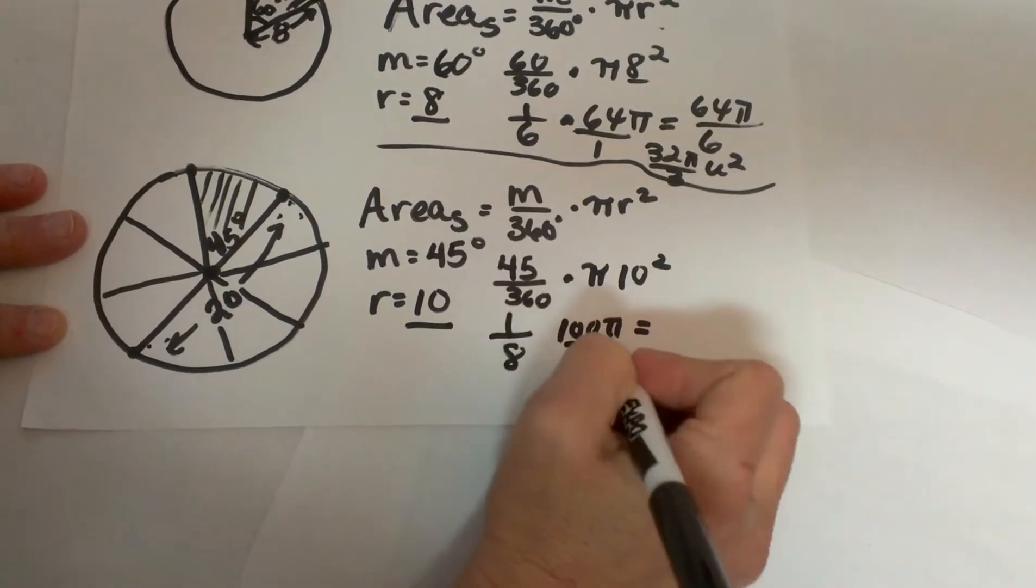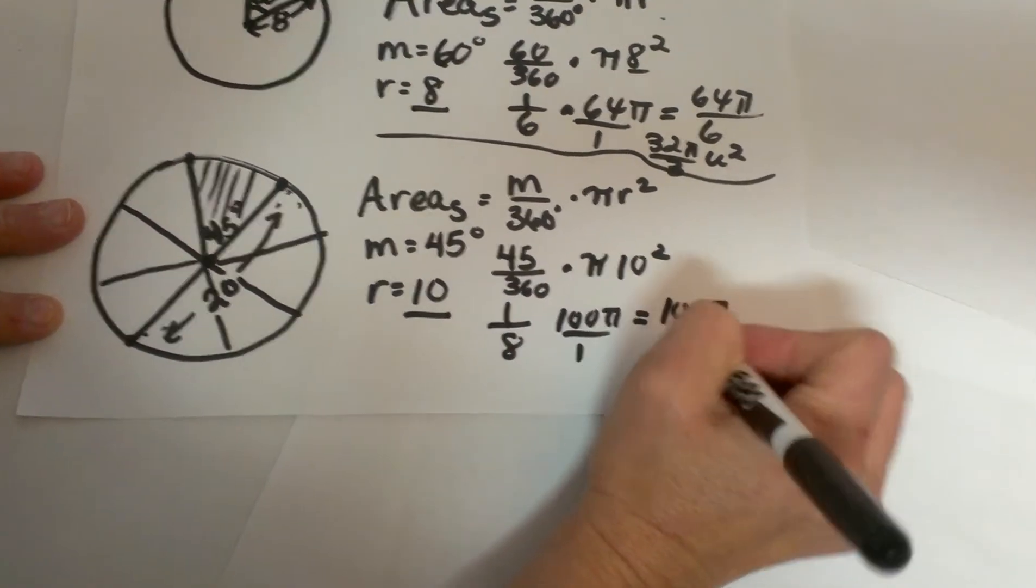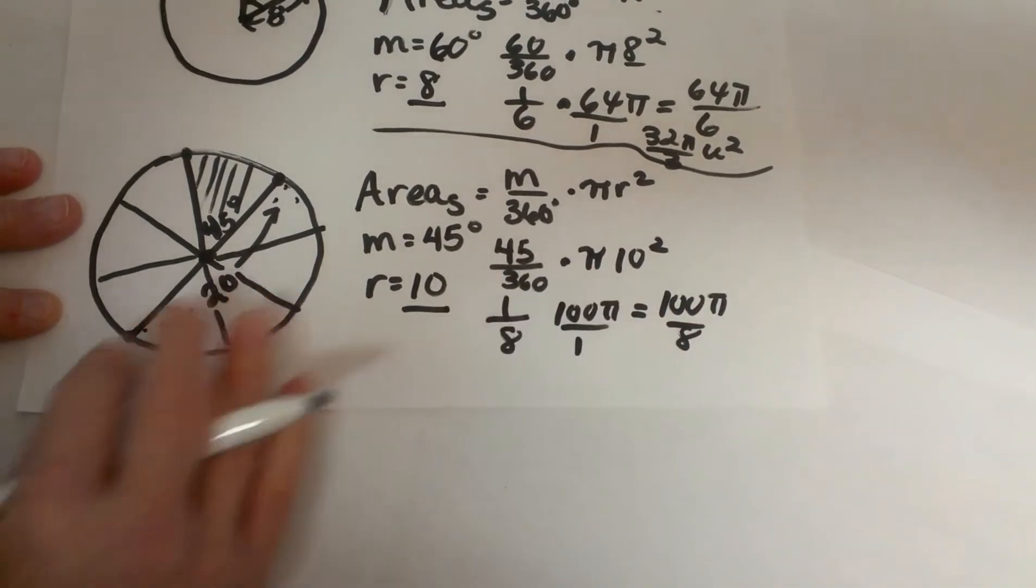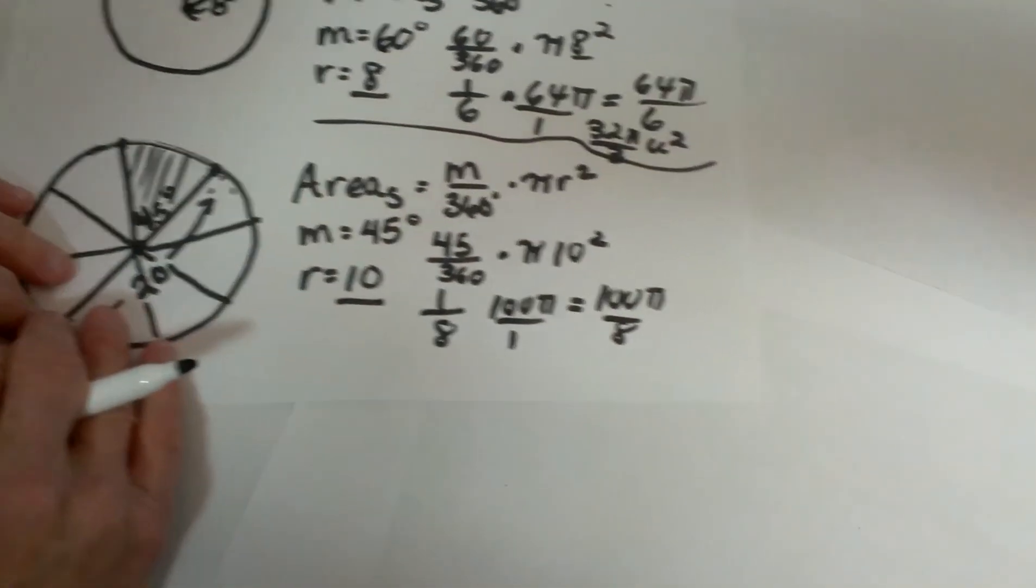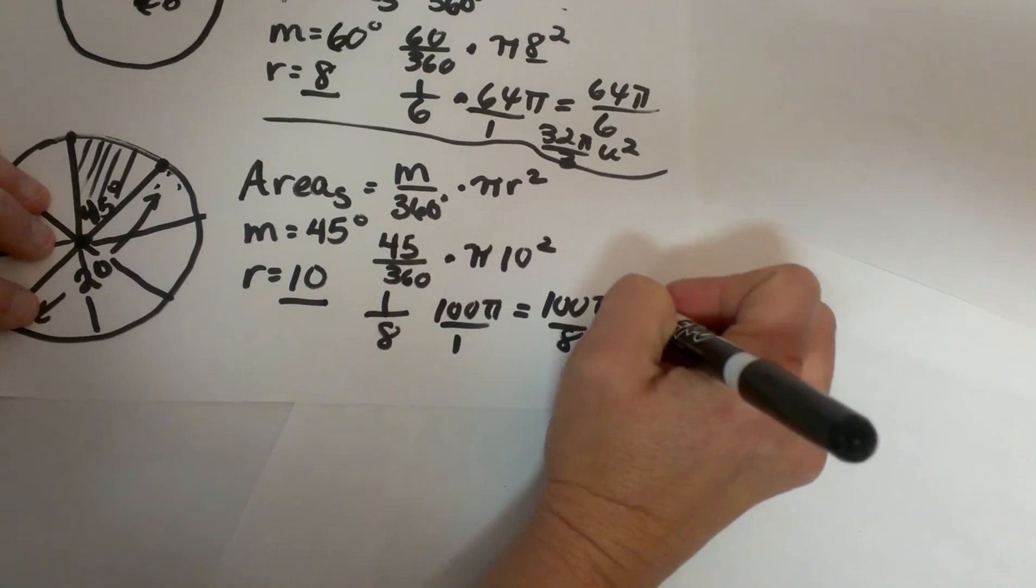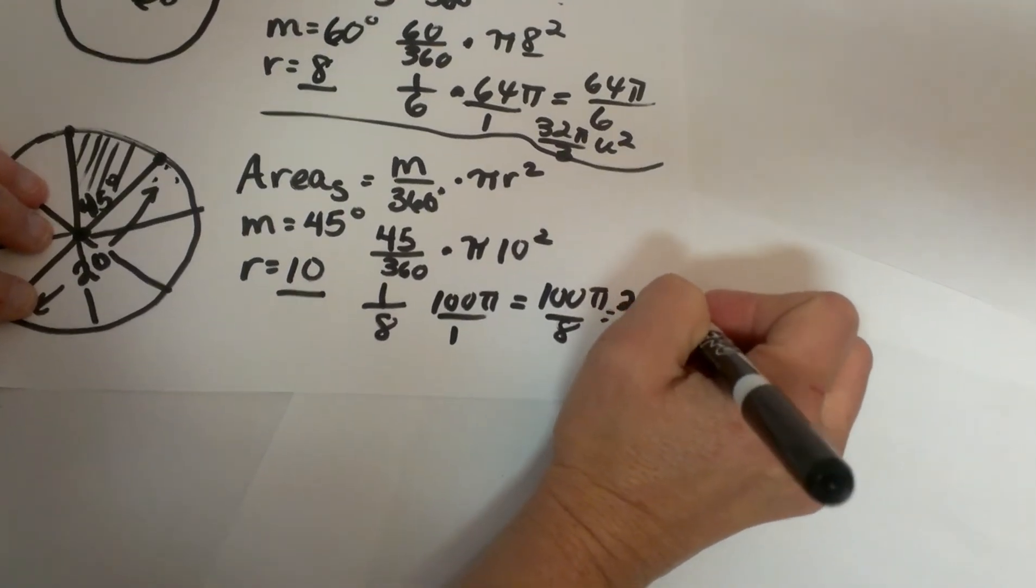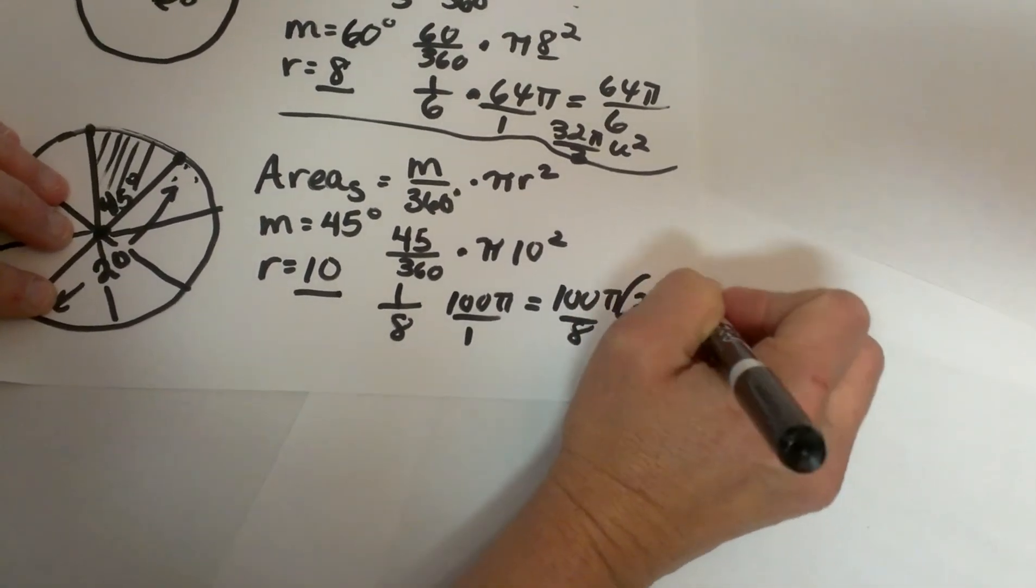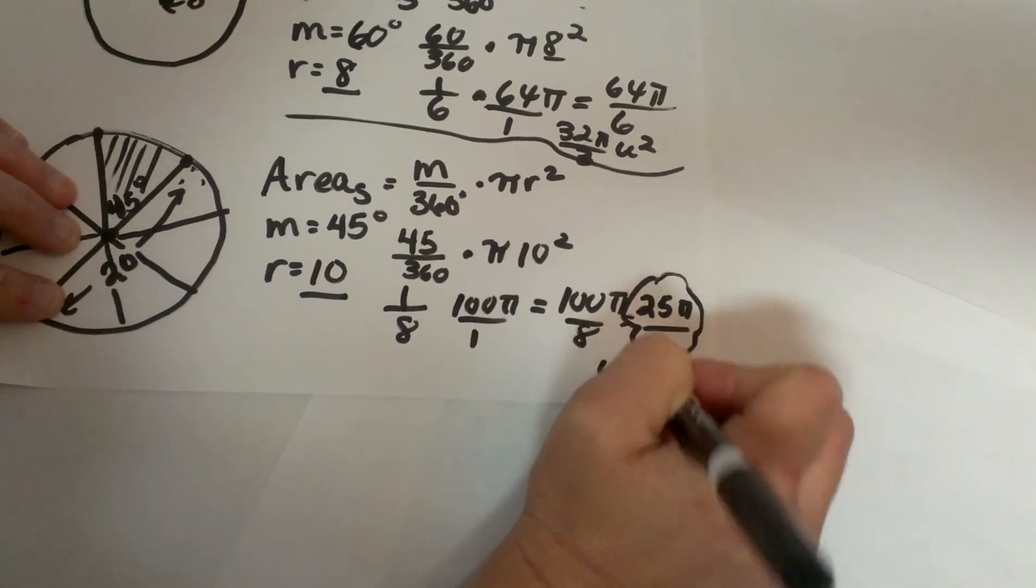Multiply across so I get 100 pi over 8 and I can divide those by 4. So let's divide those by 4 and I am going to get 25 pi over 2. And that would be my answer in the units squared.